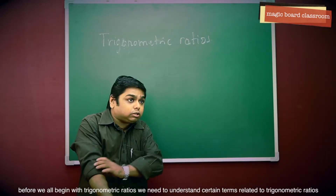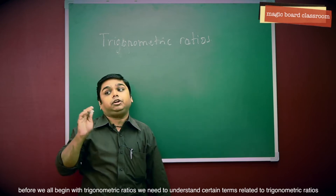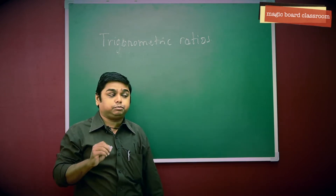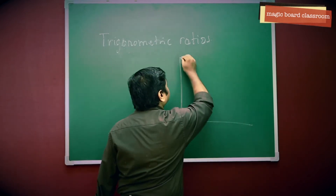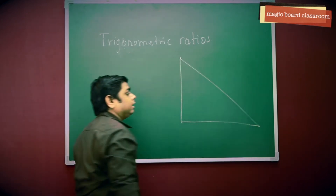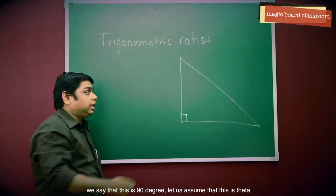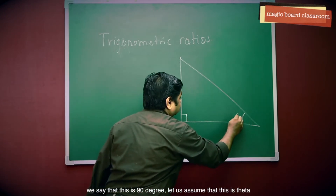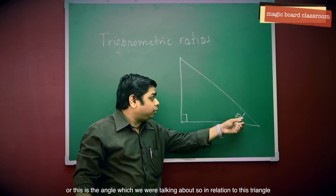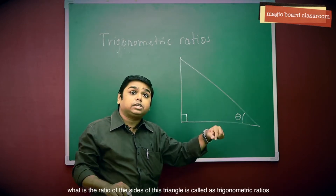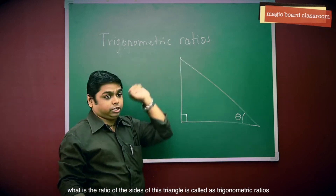Before we begin with Trigonometric Ratios, we need to understand certain terms related to Trigonometric Ratios. When we talk about a right angle triangle, we say that this is the 90 degree. Let us assume that this is theta, or this is the angle which we are talking about. In relation to this triangle, what is the ratio of the sides of this triangle? It is called Trigonometric Ratios.